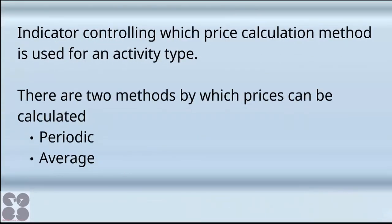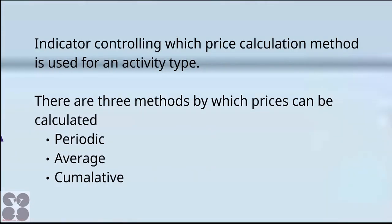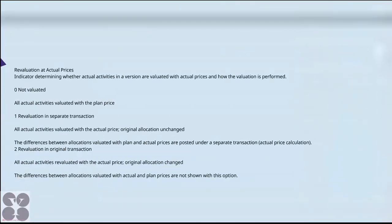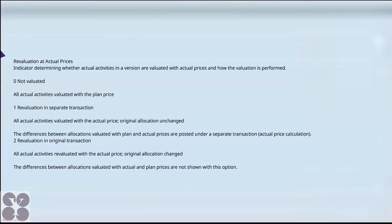For the planning method, there are two options: periodic or average — this controls what kind of activity type calculation to use. For actual, there are three options: periodic, average, and cumulative. For revaluation, there are three options: option 0 means not revaluated; option 1 means all actual activities are evaluated with the actual price; option 2 means reverse revaluation in the original transaction, where all actual activities are revaluated with the actual price and the original allocation is changed, but the difference between allocation evaluated with actual and plan prices is not shown.